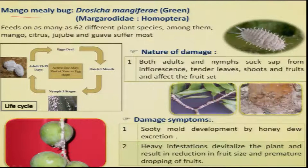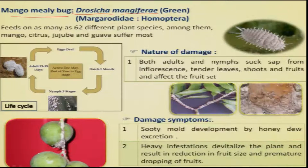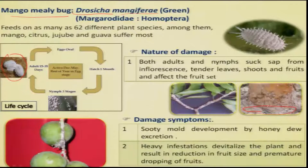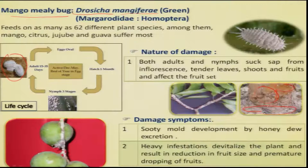The mango mealy bug, Rastrococcus mangiferae, is another important pest. Both nymphs and adults are the damaging stage. It is found throughout the year and is quite persistent. The females usually lay eggs in the soil around the tree trunk. After hatching, the first nymphs, normally referred to as crawlers, start climbing the trees and distribute themselves to various parts of the plant such as leaves, inflorescence, and fruits, where they suck the sap.